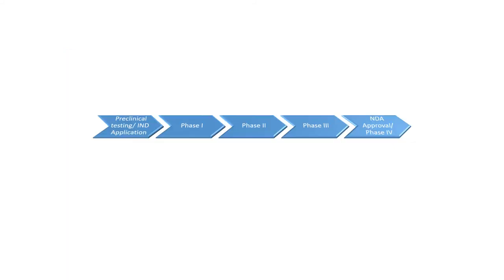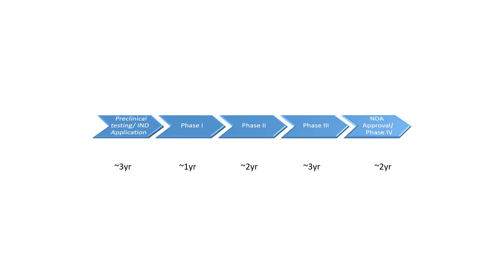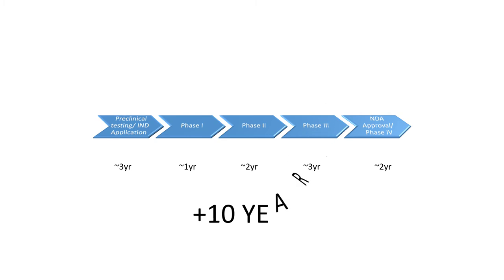Here is a generic timeline showing how a drug progresses from before, during, and after clinical trials and how long it takes. By adding up all the time taken during this pipeline, it shows that drugs take over 10 years to go from lab to marketplace.